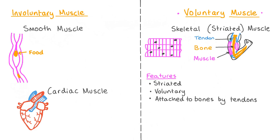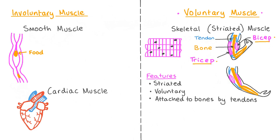Some skeletal muscles are described as antagonistic, as they work in a pair where when one muscle contracts the other relaxes, allowing a coordinated movement such as in the arm. For example, the bicep and tricep are antagonistic muscles in the upper arm. When the arm is bent you can see a contracted bicep and a relaxed tricep, but when the arm is stretched out the bicep relaxes and the tricep contracts. In addition to helping our body with movement, skeletal muscles also help us to maintain our posture.